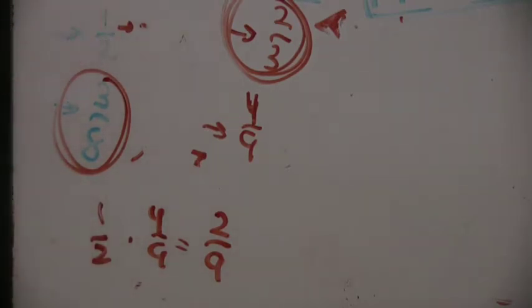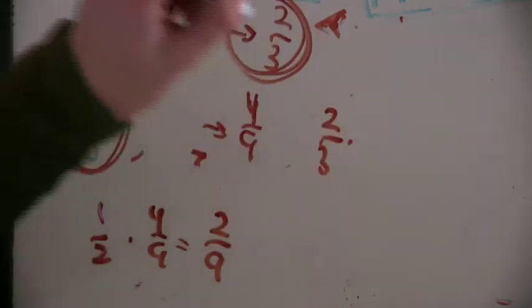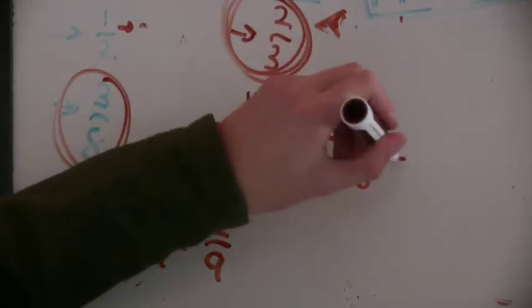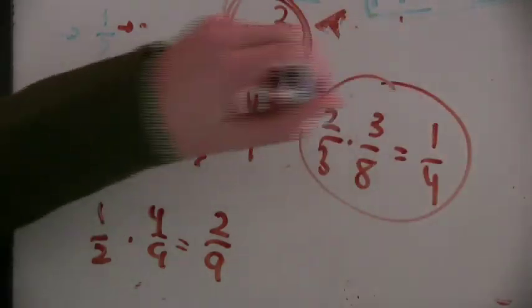The first one being coin 2 is a 2 3rds chance, times 3 8ths chance, which is 1 4th. Okay. Now, 2 9ths is smaller than a 4th. Okay. So, that means this 1 4th option is more likely to happen.